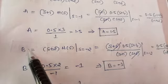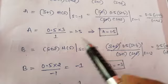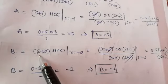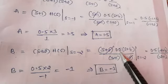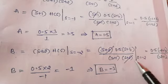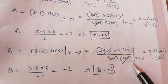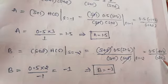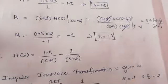Similarly, calculate the second constant B. B equals (S plus 2) multiplied by H(S) where S equals minus 2. Substituting H(S) as 0.5 multiplied by (S plus 4) divided by (S plus 1)(S plus 2) at S equals minus 2, the (S plus 2) terms cancel. Replacing S by minus 2 and simplifying, we get B equal to minus 1.